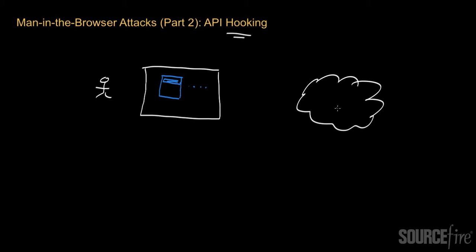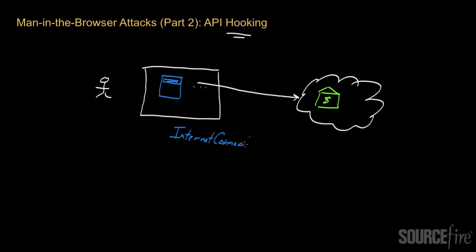Somewhere on the internet is their bank's website, which we'll mark with a dollar sign. Internet Explorer is used to connect to the internet, and when an internet connection is initiated, Internet Explorer calls a very standard Windows function called InternetConnect — a Windows function basically used for connecting to the internet. The actual code for this function is contained in a special dynamically loaded library, or DLL, called WinInet.dll.